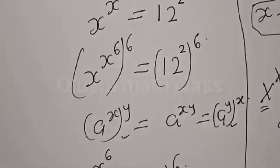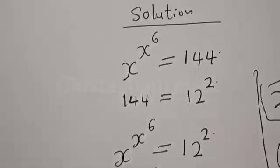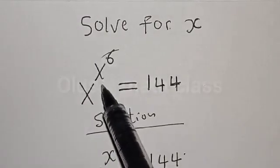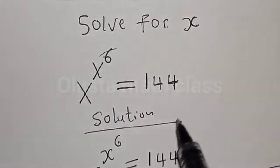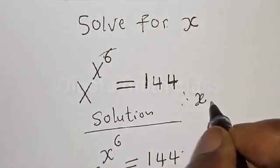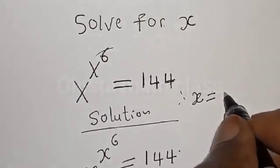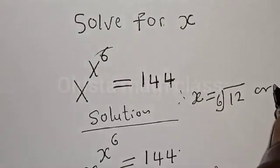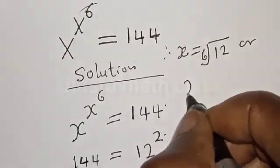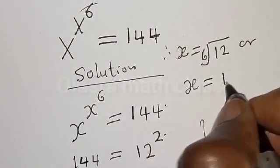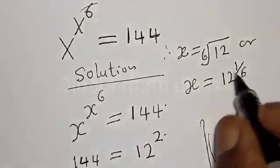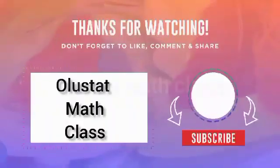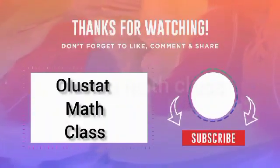We have the original equation: s raised to power s raised to power 6 is equal to 144. Therefore the value of s is equal to the 6th root of 12, or s equals 12 raised to power 1 divided by 6. Those are the values of s. If you enjoyed the class, please don't forget to like, share, comment and subscribe.